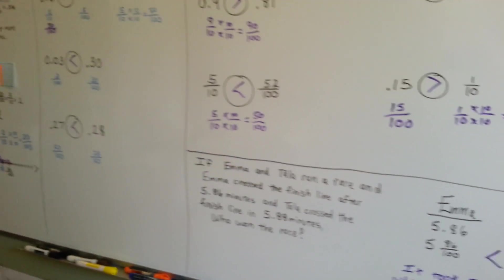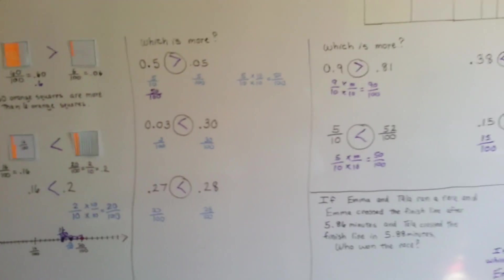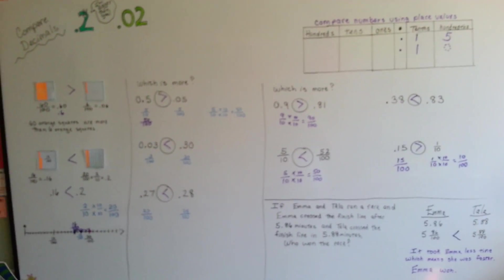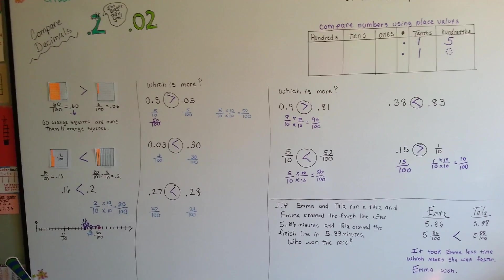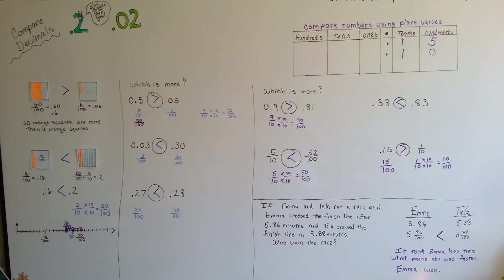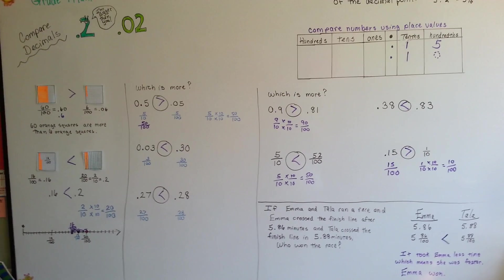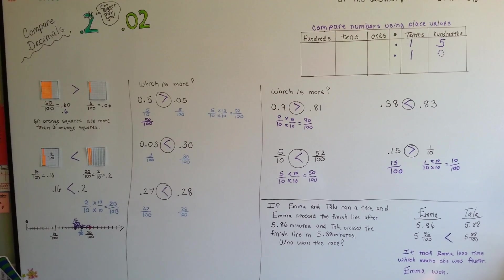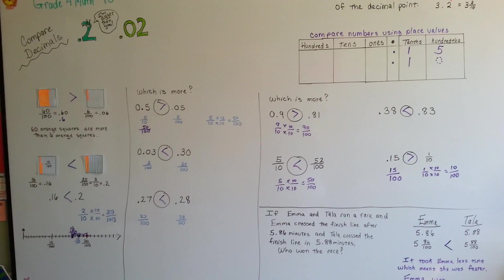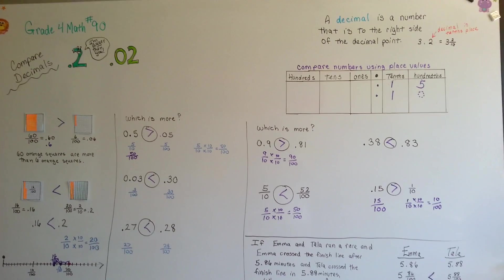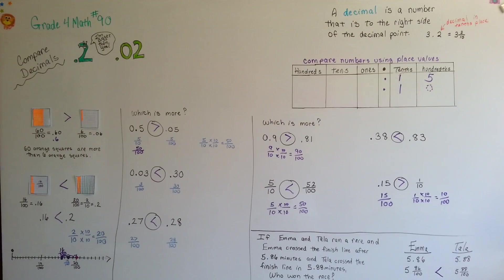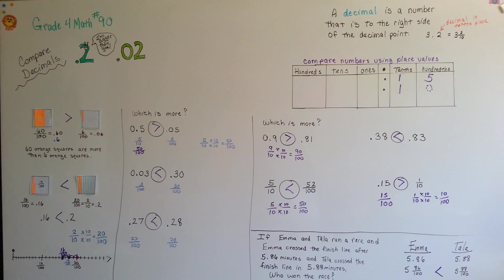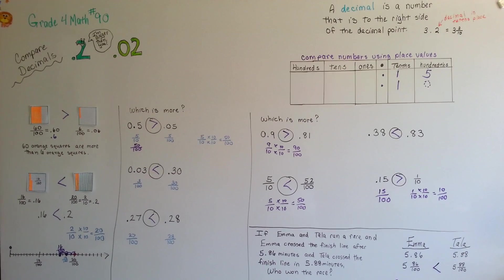Now you can see how we compared decimals. The best way to do it is to use a place value chart or to make sure that your denominators match. Get some scratch paper and make sure, with a little multiplication, if one is really bigger than the other before you commit to an answer. We're going to talk about fourth grade geometry next — I'll see you there. Bye!